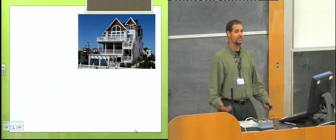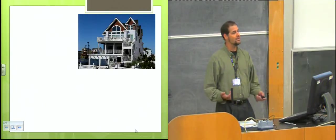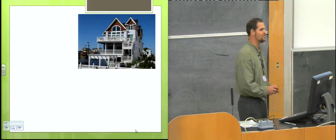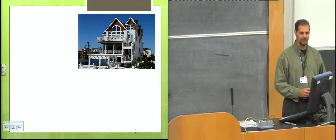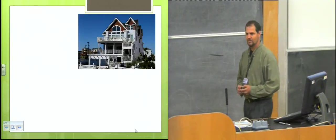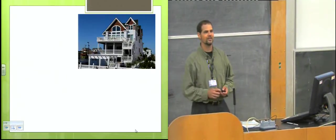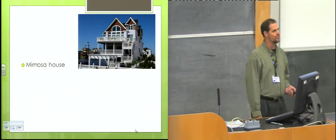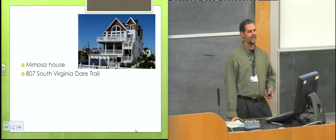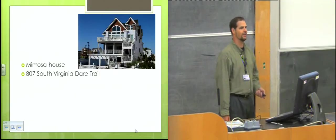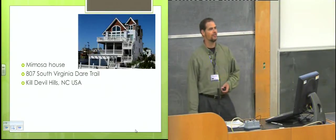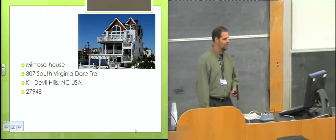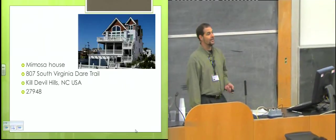On Saturday, I was far away from here. It was about 35 degrees hotter than it is here. I was sweating profusely. And I was at this little rental house on the beach called the Mimosa House. The Mimosa House is located at 807 South Virginia Dare Trail in Kill Devil Hills, North Carolina, USA, 27948.